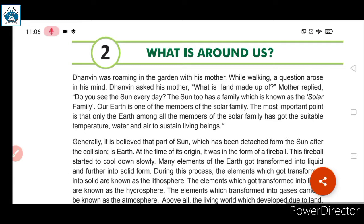Dunwin was roaming in the garden with his mother. While walking, a question arose in his mind. Dunwin asked his mother, 'What is land made up of?' His mother replied, 'Do you see the sun every day? The sun too has a family, which is known as the solar family.'